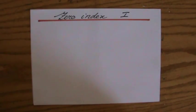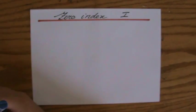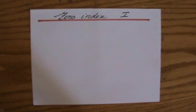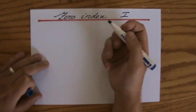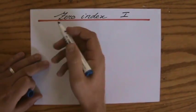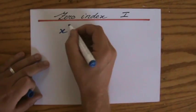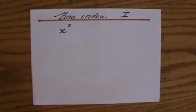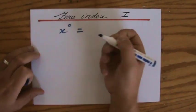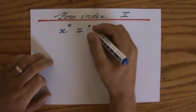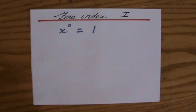We are getting around to start talking about the zero index — indices, or algebraic indices. The zero index: what does that mean? If I have a base, let's say X, and the index is zero, what does that equal to? I'm going to say that equals to one, and the book usually presents that as if it's something you have to remember.